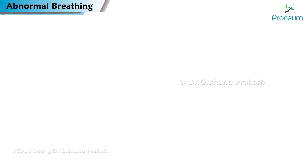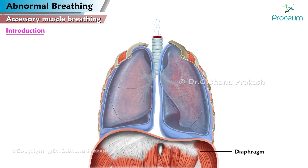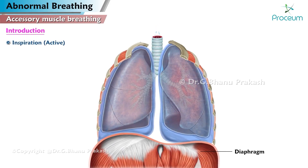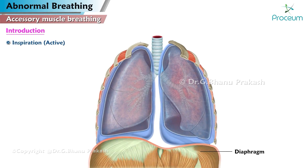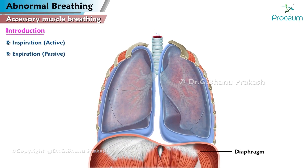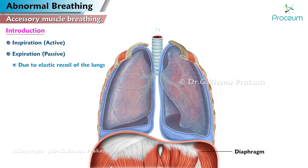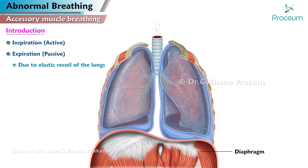Abnormal breathing: accessory muscle breathing. Introduction. Normal inspiration involves only the diaphragm. Expiration is a passive process due to elastic recoil of the lungs.